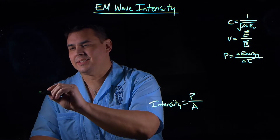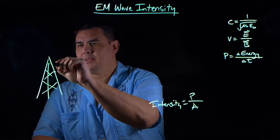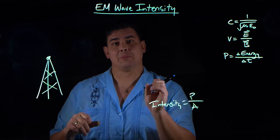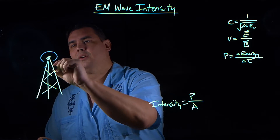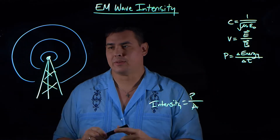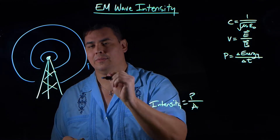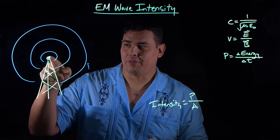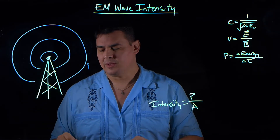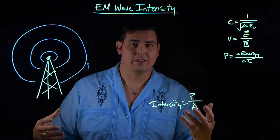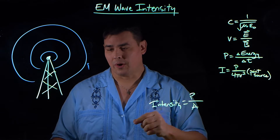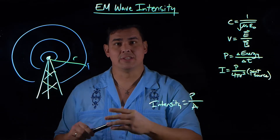Now imagine this as an antenna — a point source broadcasting a signal in all directions, like ripples when you throw a rock in a pond. If your receiver is far away, you won't get the full energy from the radio tower because the wave spreads out. If you're closer, that sphere is smaller so you get more. For a point source, the intensity equals the power over 4πr², where r is how far your receiver is from the broadcasting antenna.